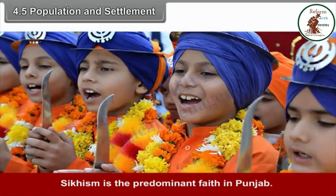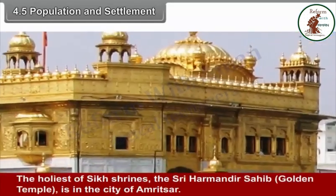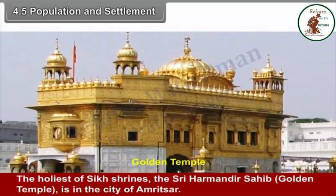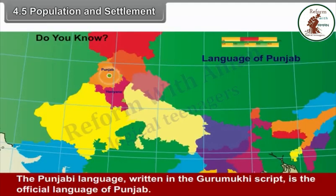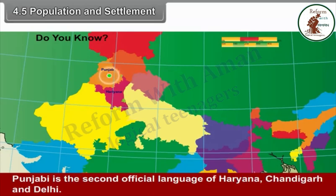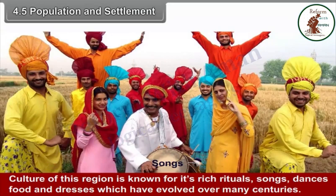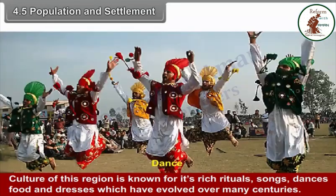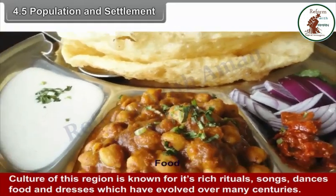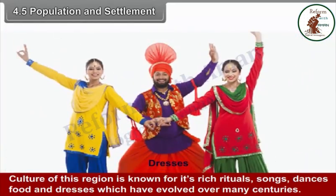Sikhism is the predominant faith in Punjab. The holiest of Sikh shrines, the Shri Harmandir Sahib (Golden Temple), is in the city of Amritsar. The Punjabi language, written in the Gurmukhi script, is the official language of Punjab. Punjabi is the second official language of Haryana, Chandigarh and Delhi. The culture of this region is known for its rich rituals, songs, dances, food and dresses which have evolved over many centuries.